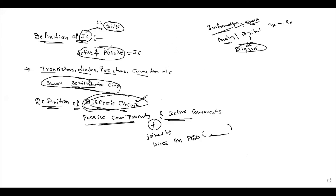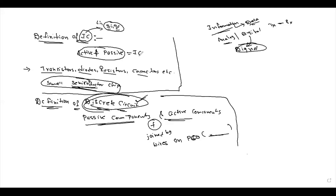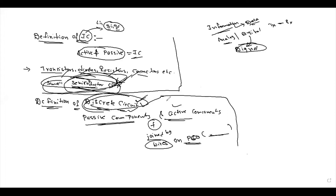Now you can understand the definition of IC as well as the definition of discrete circuit. The two are similar — both use active and passive components. But in IC, all components are placed on a small semiconductor chip, whereas in a discrete circuit they are separate. That is the difference between IC and discrete circuit.